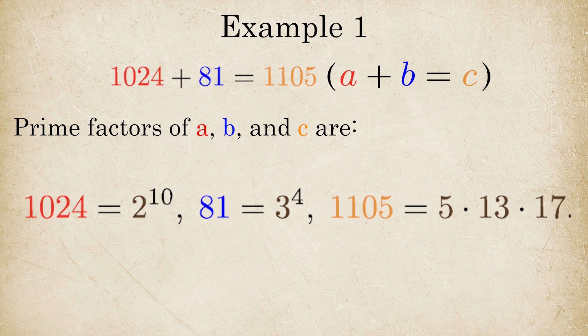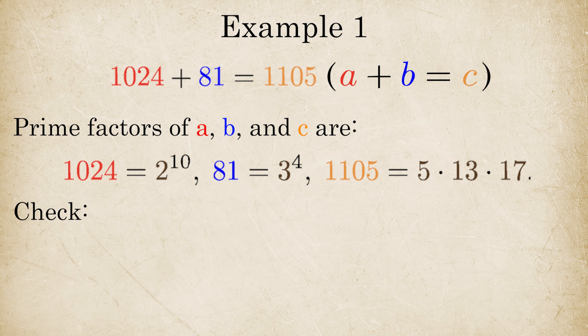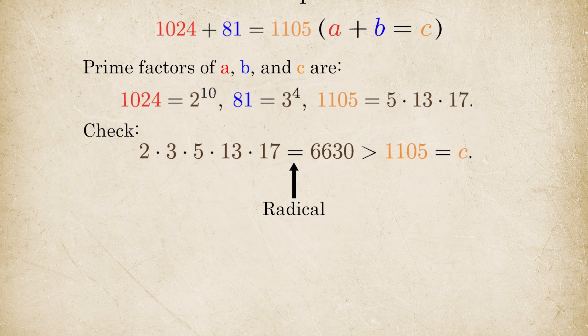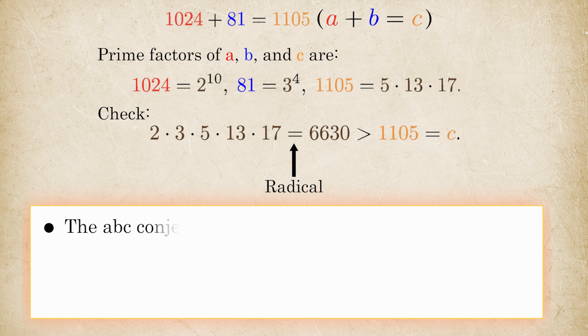This is a requirement for ABC conjecture to hold. If you multiply all the unique different prime numbers from 1,024, 81, and 1,105, you get 6,630, a number much bigger than 1,105. This kind of product is called the radical. The ABC conjecture says that this is the normal scenario. The radical of ABC is often much larger than C, but not always.